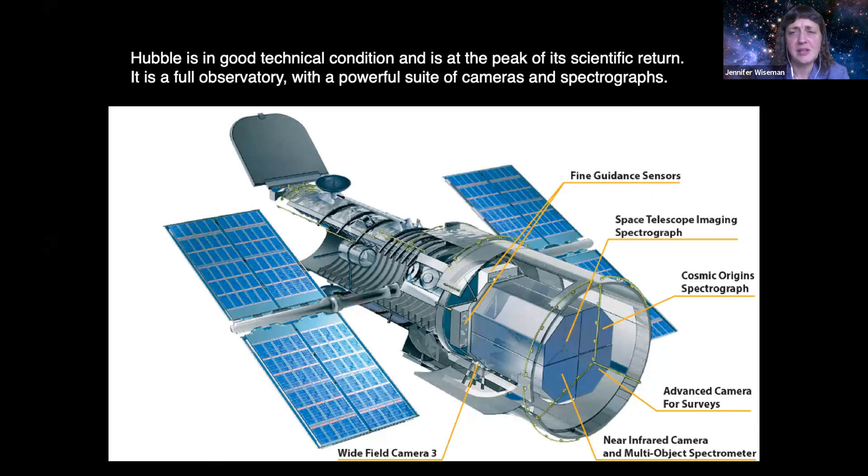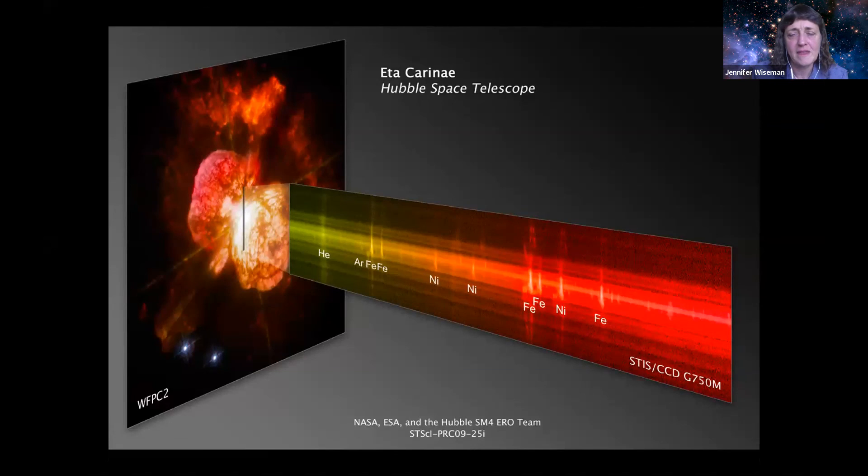Hubble is in good technical condition at the peak of its scientific return. And we call it an observatory because astronomers can choose which of these instruments are best suited for the particular type of observations that are needed for a particular investigation. Here's an example of what you can do with a spectrograph. I mean, we're all familiar with the pretty pictures from Hubble, but the spectrographs are very powerful scientifically. Here's an evolved star system called Eta Carinae. It has lots of little eruptions over the years. What's going on and what's in that material that's being expelled into the surrounding space? Well, with a spectrograph, you can take the light, spread it out into its constituent colors or wavelengths, and get a handle on what types of elements are emitting the light. So here we see helium, argon, iron, nickel, for example, in the material that's been produced in that star system and it's being expelled into interstellar space. This is the STIS spectrograph producing this data.